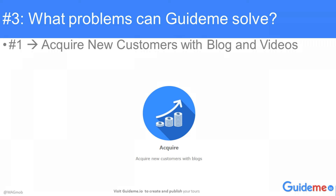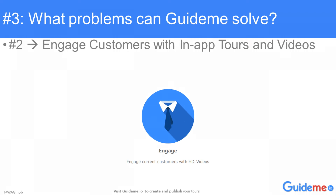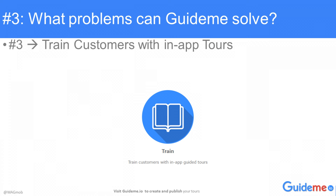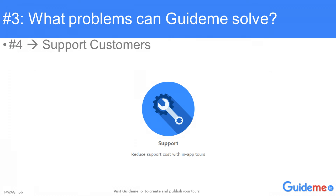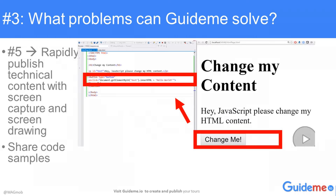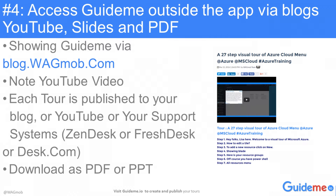So what problems can GuideMe solve? First, acquire new customers with blog and videos. Second, engage customers within app tours and videos. Third, train customers within app tours. Fourth, support customers. Fifth, rapidly publish technical content with screen capture, screen drawing, and share code samples. Access GuideMe outside the app via blogs, YouTube, slides, and PDF.